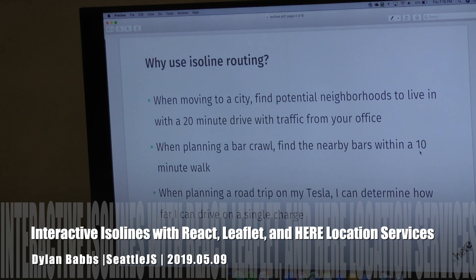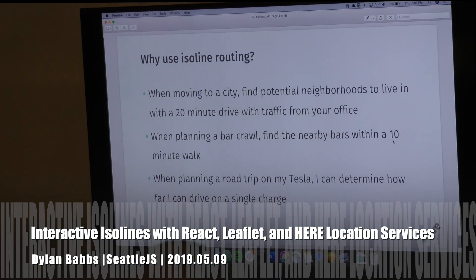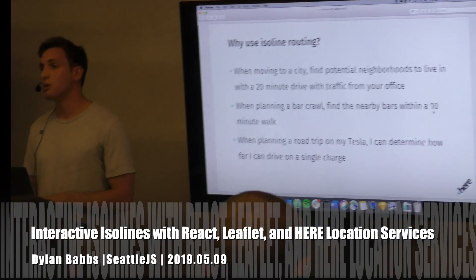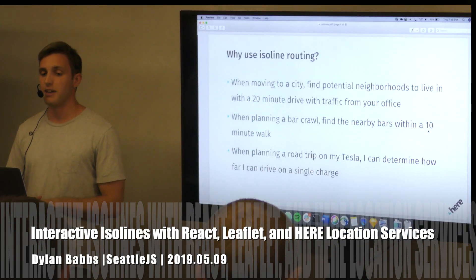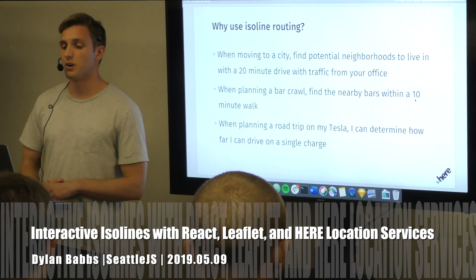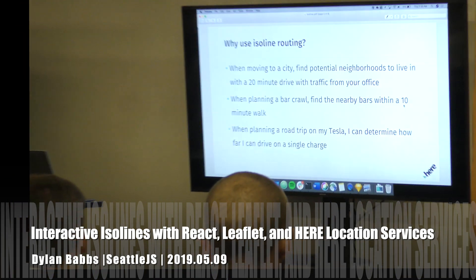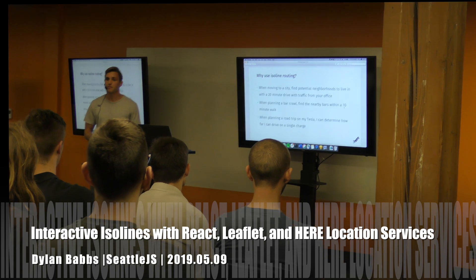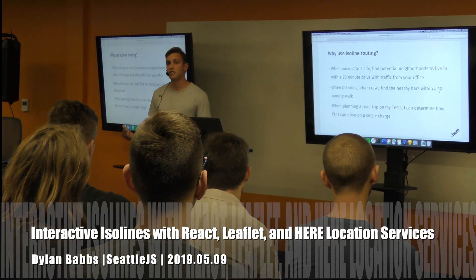Isoline routing has a couple of different use cases. Say you're moving to a new city and you already know where your office is going to be, but you want to find neighborhoods within a 20-minute drive including traffic — you can do that with this API with traffic settings included. Or say it's your friend's birthday and you're planning a bar crawl — you could find nearby bars within 10 minutes by getting the isoline polygon and filtering points of interest that fall within it.